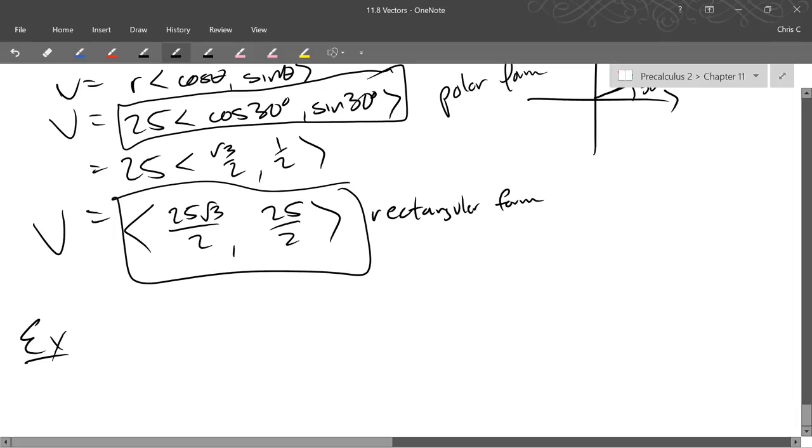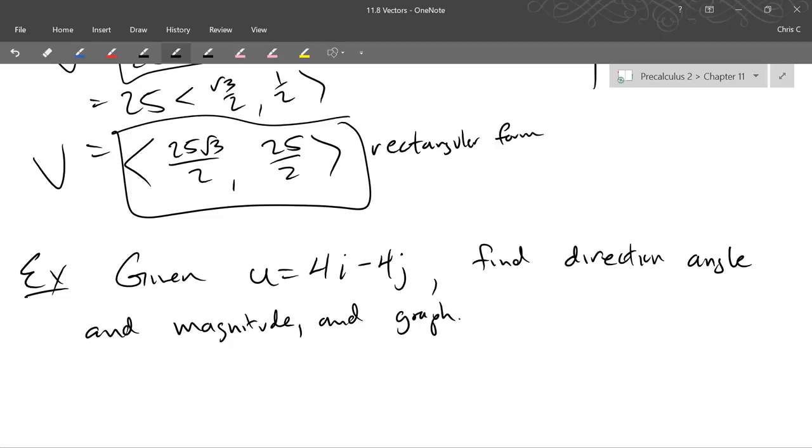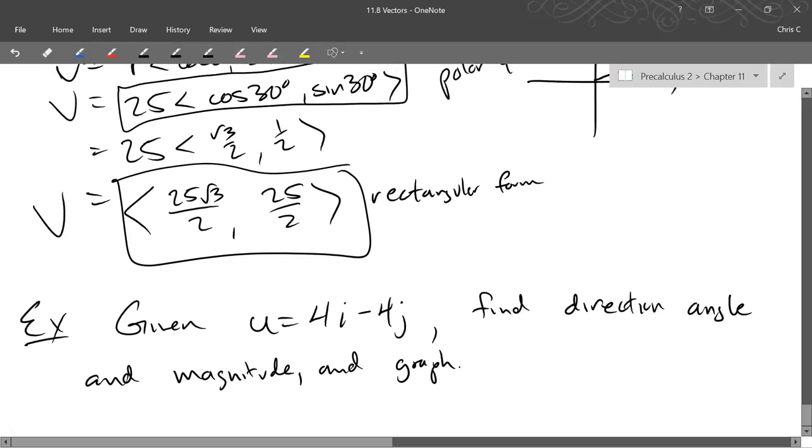So any questions on your first polar form, rectangular form? It should feel exactly like what we did in the last few sections. So our next example, we're going to go the opposite direction. Given, we'll use u for this vector, given the vector u is 4i minus 4j, find the direction angle and magnitude and graph. So I'll give you one minute to graph, find the angle and the magnitude of this vector. Graphing should be the easy part.